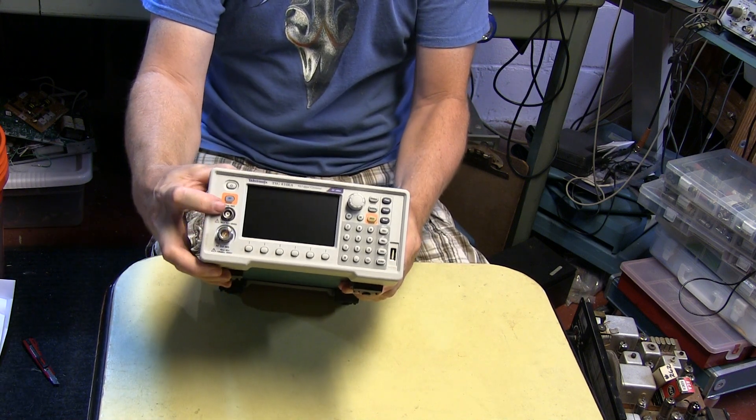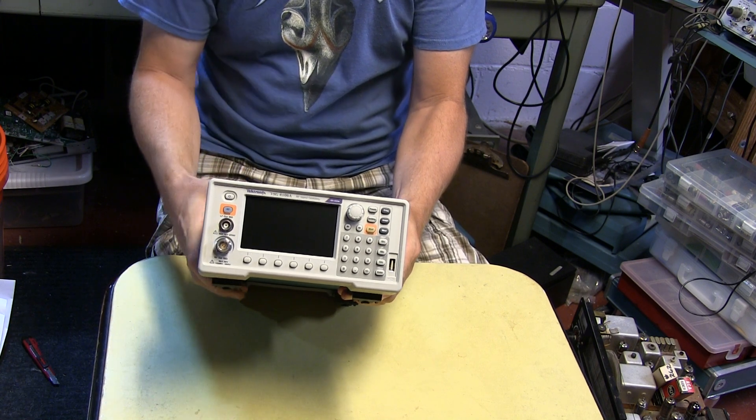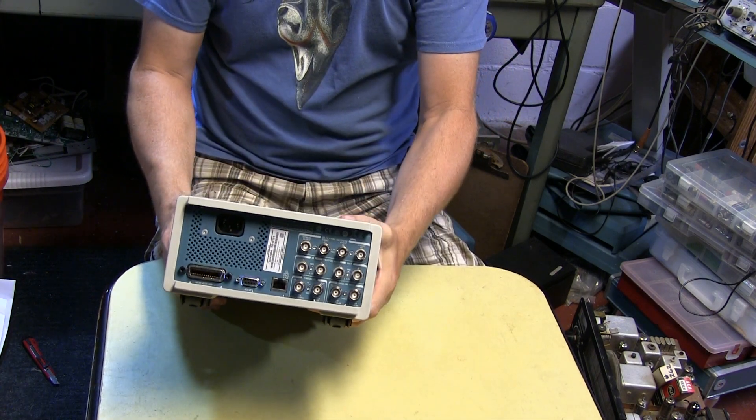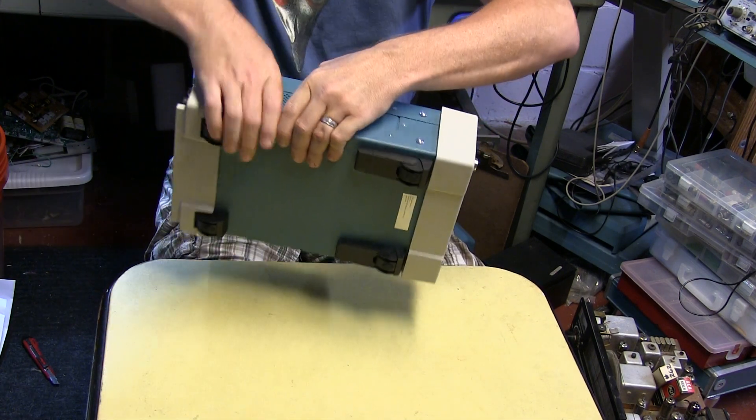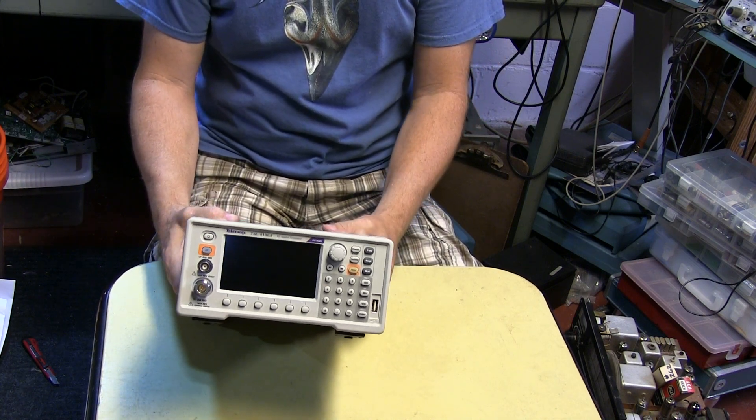RF output here and then DC to about 60 or 70 megahertz on the BNC connector here. And there's a whole myriad of connectors on the back. So let's take a closer look at all the inputs and outputs and the user interface and put this baby on the bench.